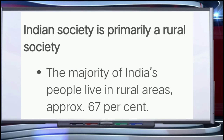Indian society is primarily a rural society. The majority of India's people live in rural areas — approximately 67%. Land is also the most important form of property. But land is not just a means of production nor just a form of property, nor is agriculture just a form of livelihood — it is also a way of life.